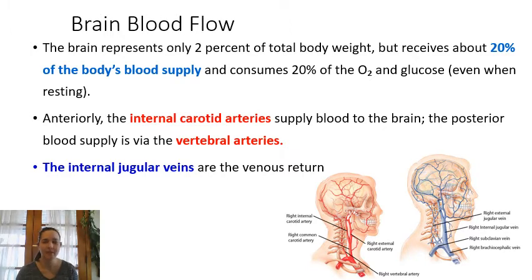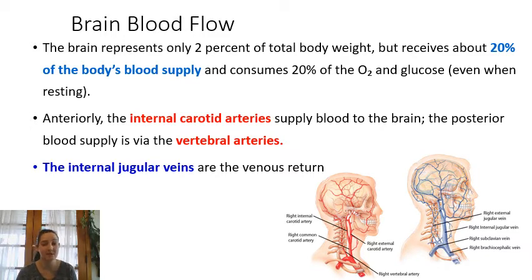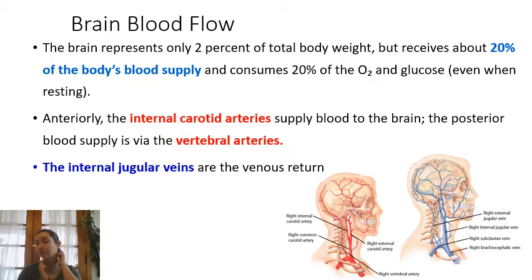As far as blood flow to the brain — the brain uses a lot of energy. Even while resting, 20% of the body's oxygen and glucose goes directly to the brain versus 80% to the rest of the entire body. Most of that blood is supplied through the carotid arteries on the sides of your neck and the vertebral arteries, which travel up through the transverse foramina of the cervical vertebrae and enter the brain through the back. Deoxygenated blood drains through the jugular veins.